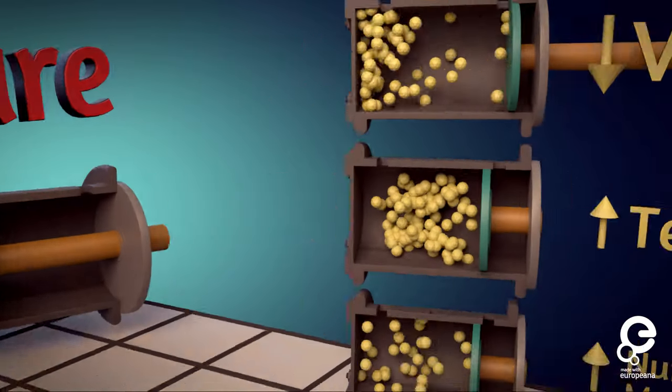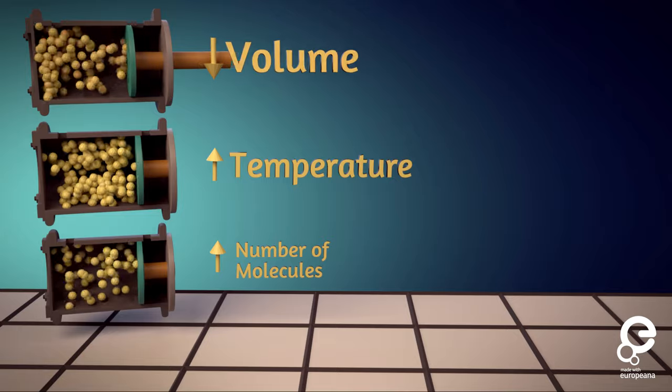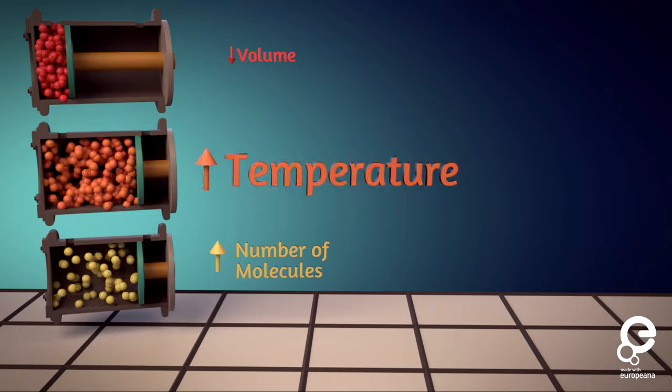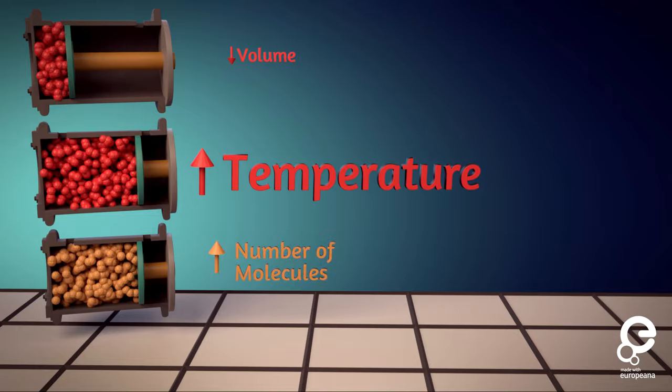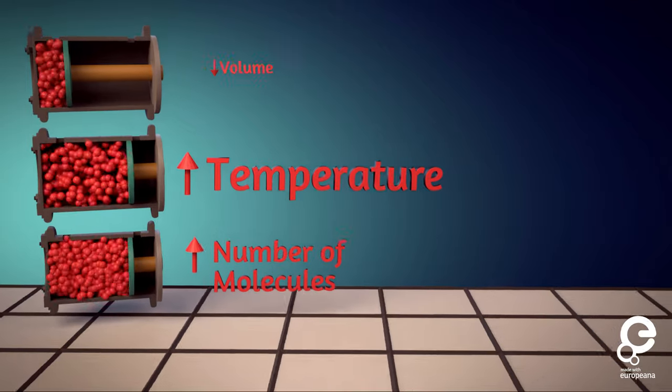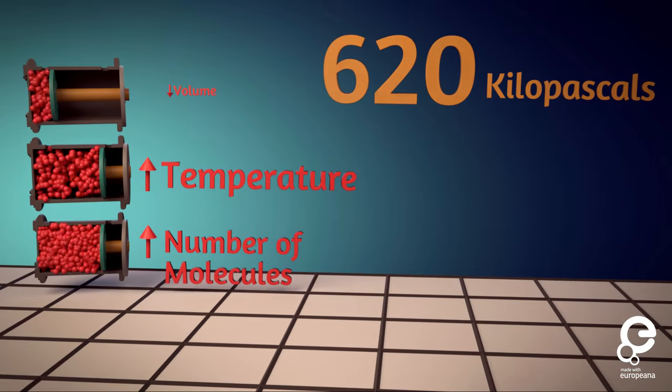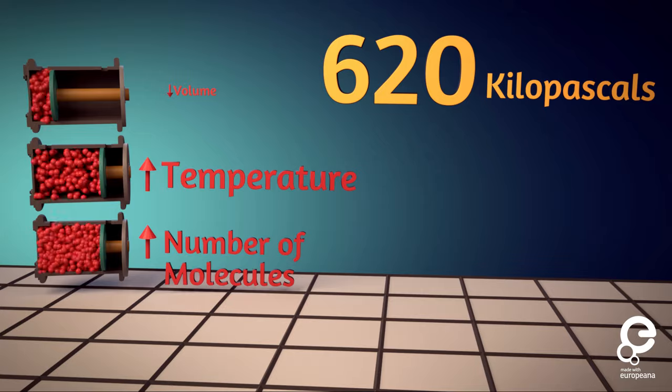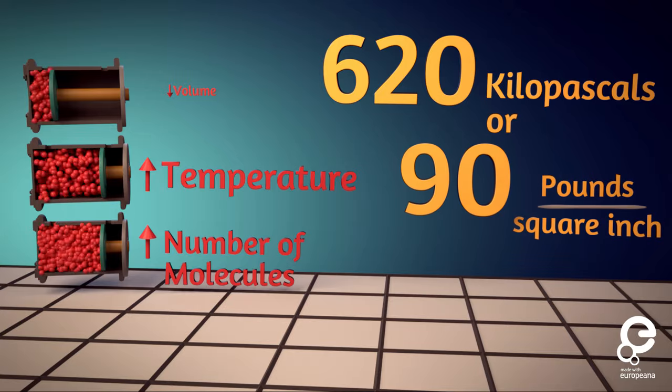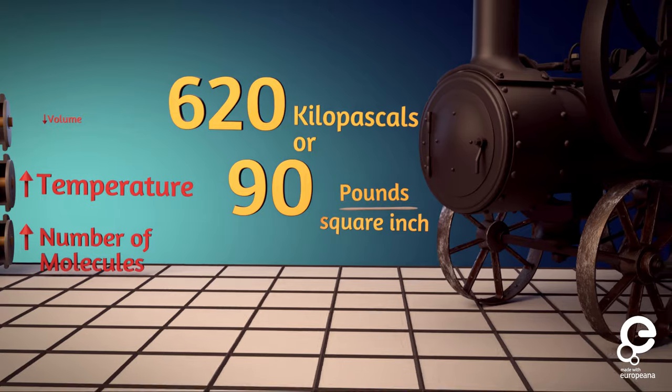If we put this all together, we understand that if we decrease the volume, increase the temperature, and increase the number of molecules, the pressure will rise drastically, reaching around 620 kilopascals of pressure, or 90 pounds of force per square inch for this traction engine.